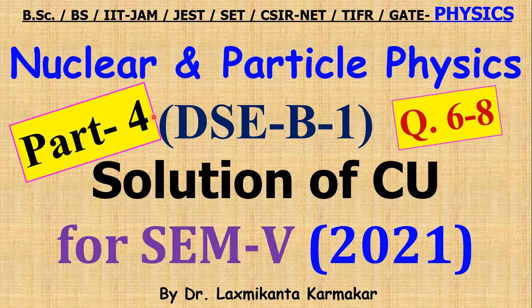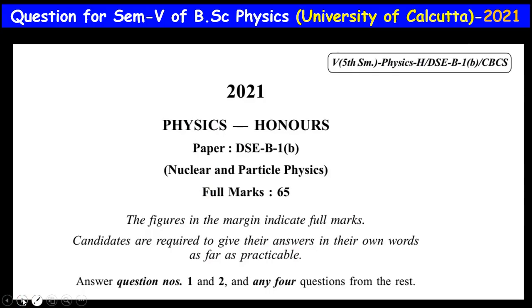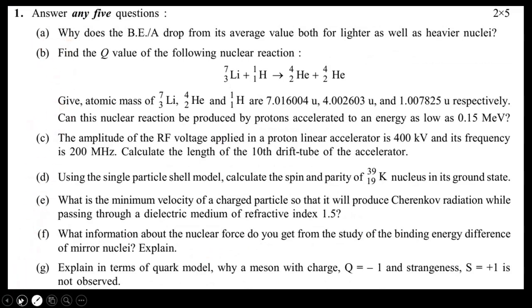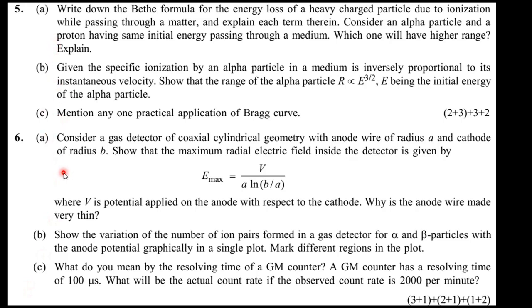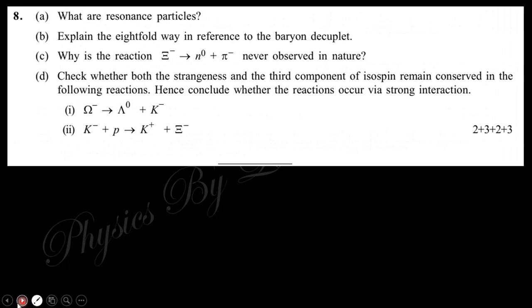Hello, welcome to everyone. This video is Part 4 of the solution for Nuclear and Particle Physics, PHCP1, for the University of Calcutta, Semester 5 Physics Honours, year 2021. We already covered three parts up to question number five. This is the total question paper — question one was solved in Part 1, question two in Part 2, and questions three, four, and five in Part 3. This is the last part of the 2021 answer series, covering questions six, seven, and eight. If you missed the previous lectures, links are given in the description box.